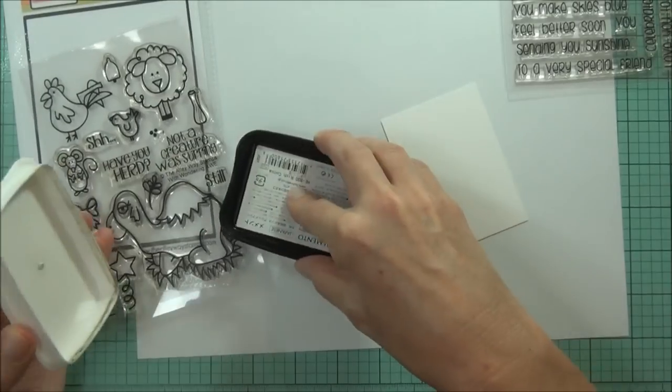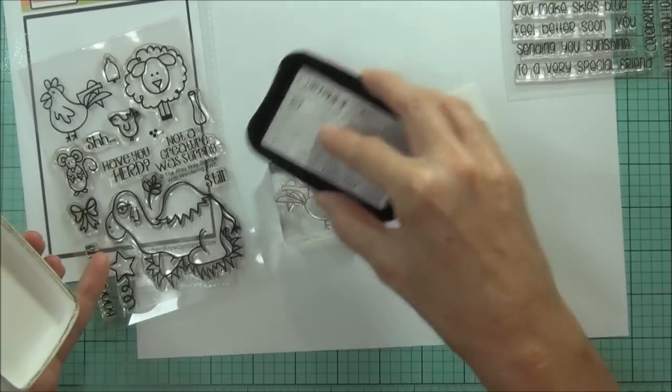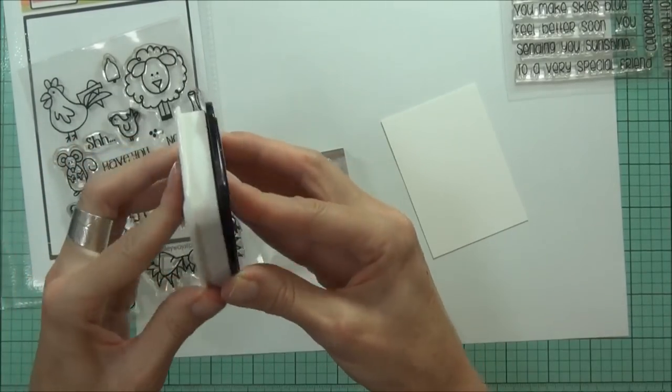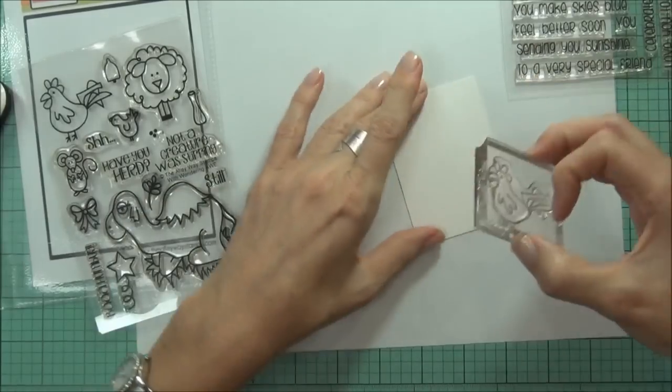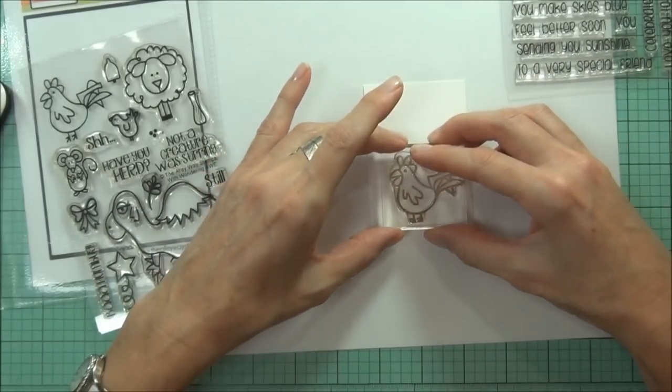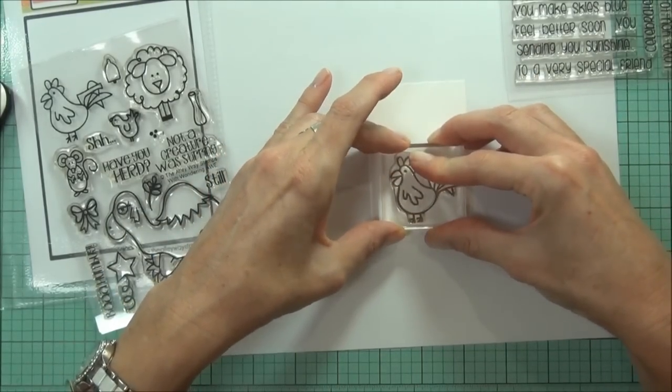Next I've got the chicken or rooster from the Wondering Ore set and I'm just using the rich cocoa again and color him in with some Copic markers and cut him out.